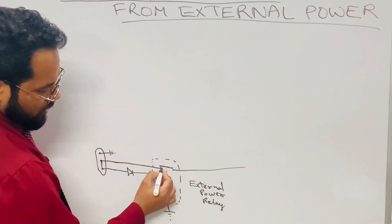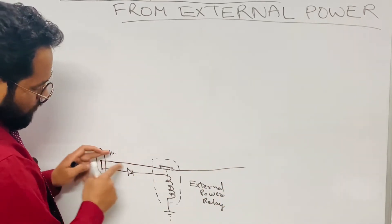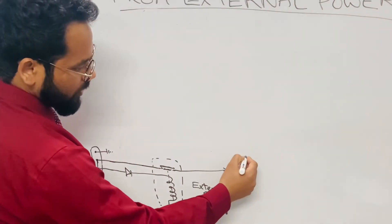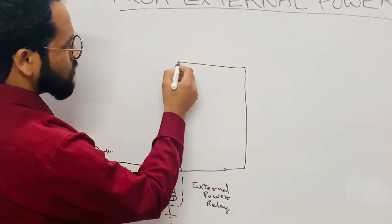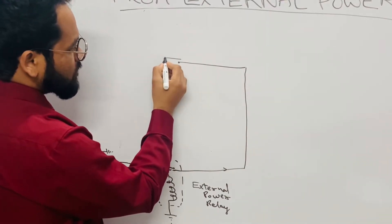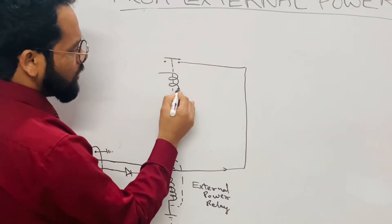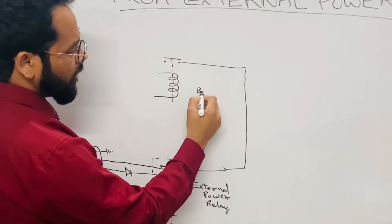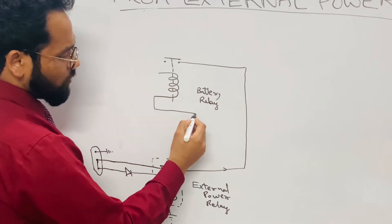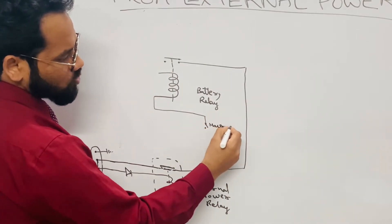When this contact closes, it will shift down and close the circuit, so supply will go ahead. The positive supply from these two points — one goes to the coil and the other goes in this path. From here the supply goes ahead and it will be given to another relay called the battery relay. But this current cannot go to the battery relay directly — there will be a contact which is open as of now, and this contact is closed by means of a coil of the battery relay.